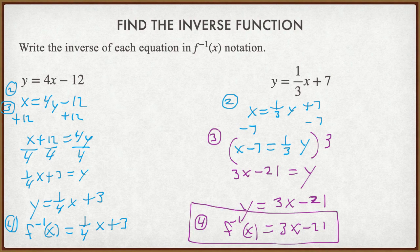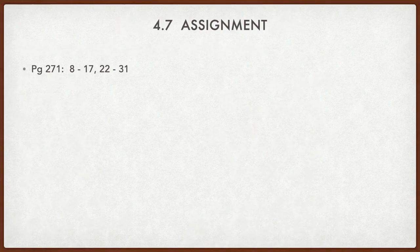That is all for section 4.7. We talked about inverse relations and inverse functions today. With inverse relations and inverse graphs, we are just switching out the x's and y's for each other — the x's become the y's and the y's become the x's. When we have an equation or function that we want to make an inverse of, we go through the four-step process to get our new equation using inverse function notation. Make sure you're showing your work. Thank you for watching and have a nice day.